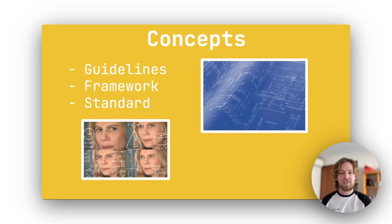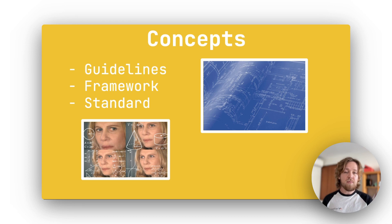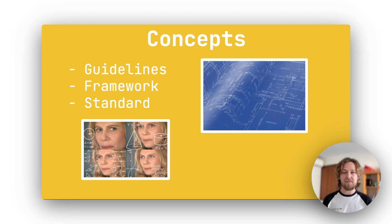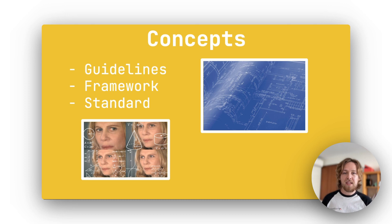Before we go further into CAF, let's just cover some definitions. In cybersecurity, guidelines refer to recommended practices or strategies. Generally they're not mandatory, and they just provide advice about something. A framework in cybersecurity is just a structured set of guidelines. Frameworks often integrate various guidelines together to build a sort of blueprint or a roadmap in order to get somewhere or be something. A standard is a specific set of criteria. Standards are more rigid and defined compared to frameworks, and they can be voluntary, but they can also be mandatory depending on the context.